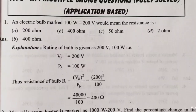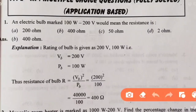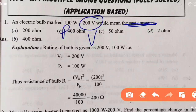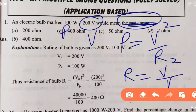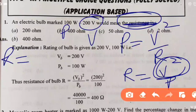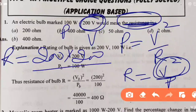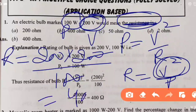First question: An electric bulb is marked 100 watt. Power given is 100 watt, voltage given is V. Find the resistance. The formula for power is P = V² / R, so R = V² / P. Voltage is 200 V, so R = 200² / 100 = 40,000 / 100 = 400 ohms. This is the answer.